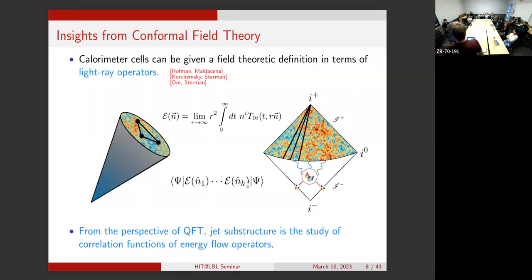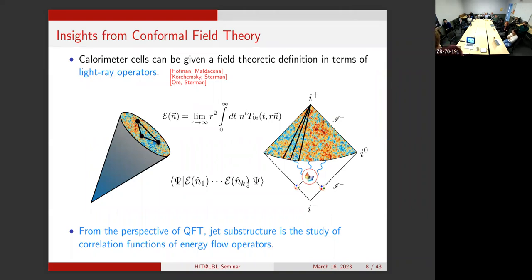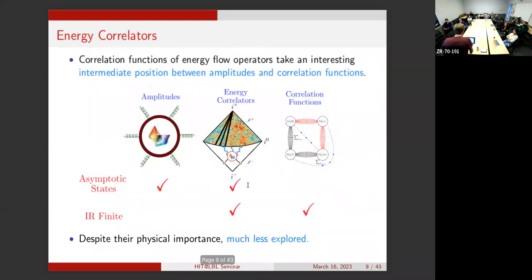The nice thing about this definition is it allows us to phrase what jet substructure is from a formal field-theoretic perspective: jet substructure is the study of higher-point correlation functions of these energy flow operators in some non-trivial state—a state of the LHC, a state of the quark-gluon plasma, or something like that. This is very nice because you can start to use more formal field theory techniques to understand these complicated objects.